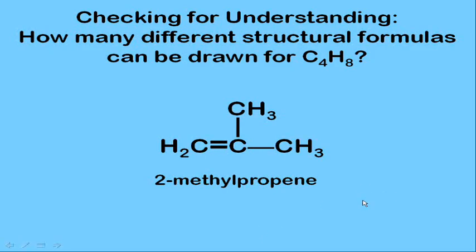Instead of four carbons in a row, you could have three carbons in a row with a double bond — that molecule is propene. We then add a branch: the CH₃ branch is known as a methyl group. We can't put the methyl group on the end because that would extend the carbon chain from three to four, making it butene. The only place to put a methyl group on propene without extending the chain is on carbon two, giving us 2-methylpropene.